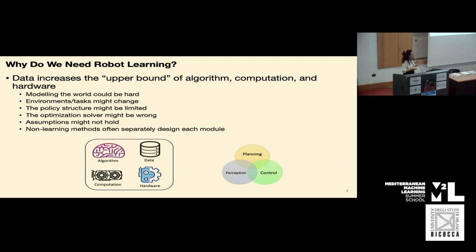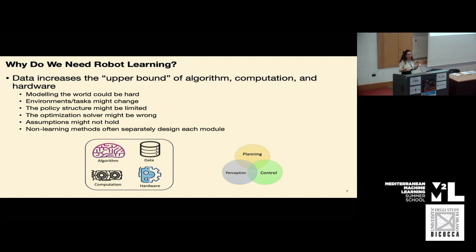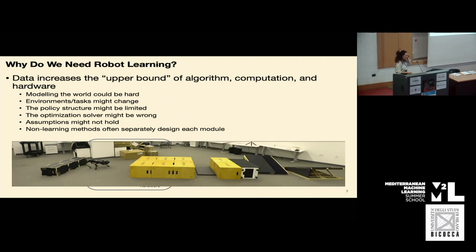Usually in robotics we try to solve this triad of perception, planning, and control — or sense, think, and act — as completely separated problems. Model-based methods and traditional robotics try to tackle each of these parts separately. But to achieve intelligence, you need to be somewhere in between and have a system and algorithms that can really integrate everything together so that you can be reactive, robust, and adaptive. This is what we hope to do with robot learning.